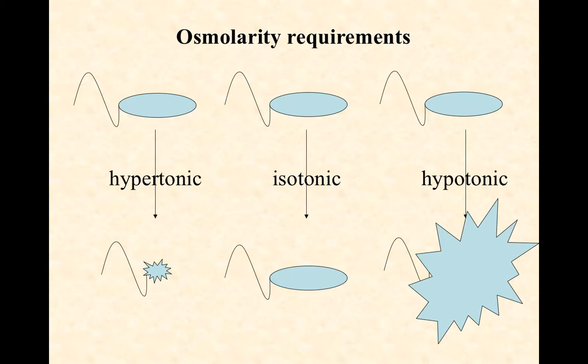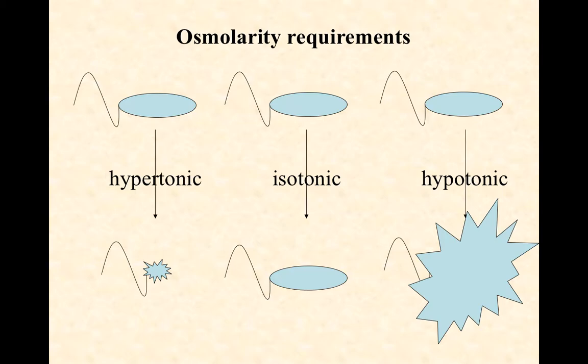Those are some of the more important physical factors that can control microbial growth: temperature, pH, and osmolarity. Make sure that you work through those and let me know if you have any questions.